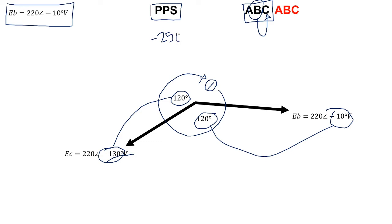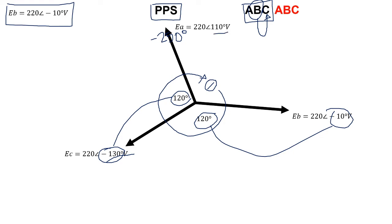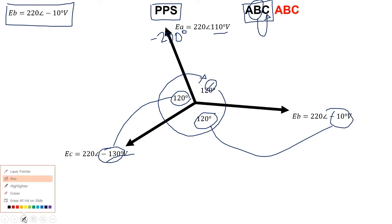Then after C, you must again have a spacing of 120 degrees, so we take minus 130 minus 120, which gives an angle of minus 250 degrees. This angle is large. If you punch your calculator with 220 at the angle of minus 250, the calculator itself will give you a smaller angle, and that smaller angle is going to be 110 degrees. The angle of 110 and minus 250 are the same — it's just a difference in reading.